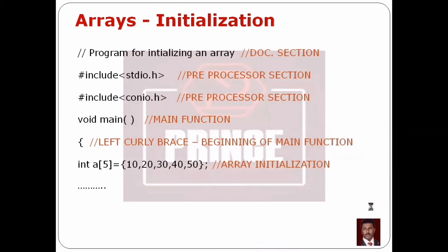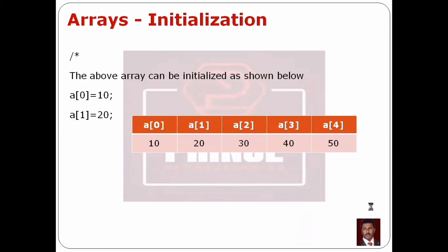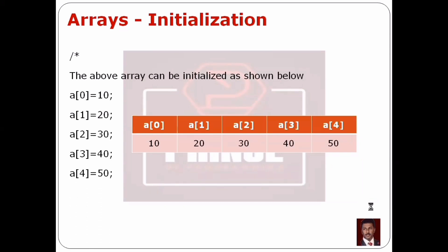For example: a[5] = {10, 20, 30, 40, 50} with curly braces containing five integer numbers. The values are stored as follows: in a[0] the first value is 10, in a[1] is 20, in a[2] is 30, in a[3] is 40, and in a[4] is 50. So in the 5 elements, we store the values in 5 different continuous locations.